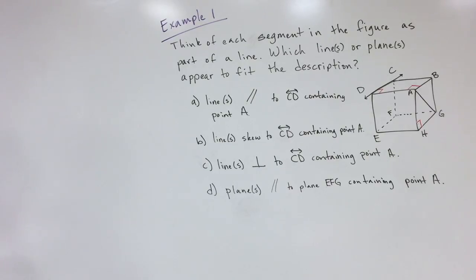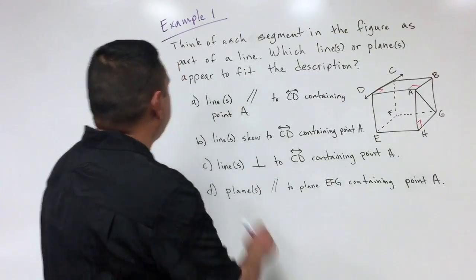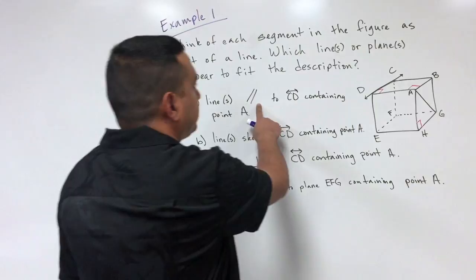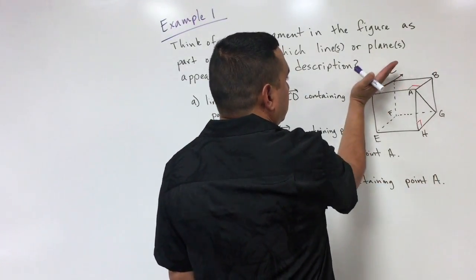Example one says: think of each segment in the figure as part of a line. Which lines or planes appear to fit the description? Part a asks for lines parallel to line CD containing point A. Part b asks for lines skew to line CD containing point A. Part c asks for lines perpendicular to line CD containing point A. Part d asks for planes parallel to plane EFG containing point A.